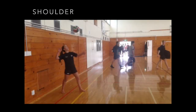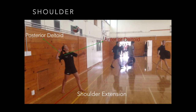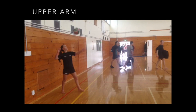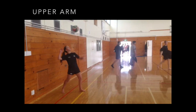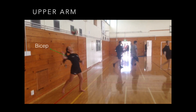Next is the shoulder, which is a shallow ball and socket joint. This movement is shoulder extension, involving the posterior deltoid, the anterior deltoid, the latissimus dorsi and the pectorals — the agonist being the posterior deltoid and the latissimus dorsi, and the antagonist being the anterior deltoid and the pectorals. Next in the sequence is the upper arm, involving the bicep and the tricep, showing elbow flexion using the hinge joint of the elbow, with the agonist being the bicep and the antagonist being the tricep.